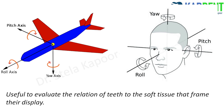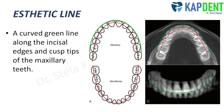Before getting into the terms, let us understand what is an aesthetic line. This line passes along the incisal edges and the cusp tips of the maxillary teeth, and in the given figure it is depicted by a curved green line. The rotation of the aesthetic line of dentition is useful to evaluate the relation of teeth to the soft tissues that frame their display.